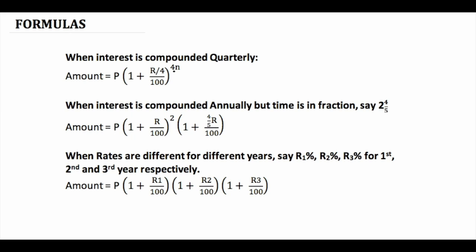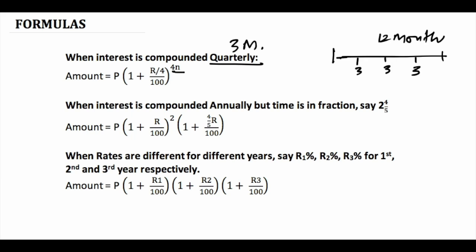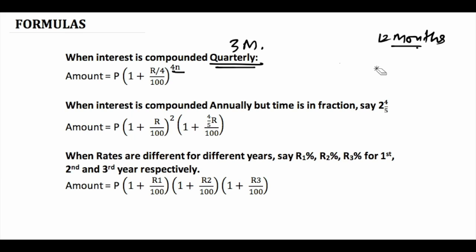There are four quarters in a year: three months, three months, three months, three months. If you divide twelve months by three months you get four quarters. So when we talk about quarterly compounding, we multiply the time period by four and divide the rate of interest by four to arrive at the amount.